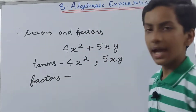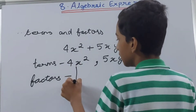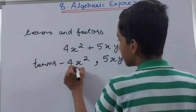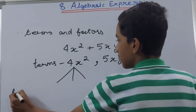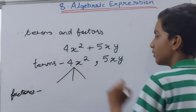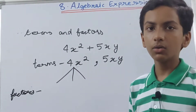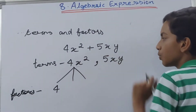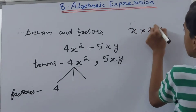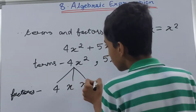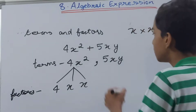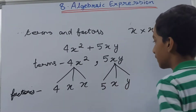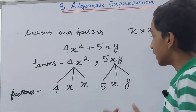What are the factors of a term? For the term 4x², we write down all constants and variables individually. So the factors are 4, x, and x — because x squared means x times x. For the term 5xy, the factors are 5, x, and y. All three factors combine to make the term, and the terms combine to make the expression.